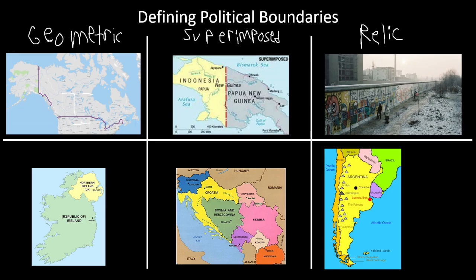Next we have the boundary between Northern Ireland and the Republic of Ireland. Ireland is its own country. Northern Ireland and Ireland used to be one region in the United Kingdom, but the evolution occurred and Ireland is now its own country. This occurred with the evolution of the cultural landscape — people settled, developed culture, and over time the boundary change occurred. This is known as a subsequent boundary. The boundaries are drawn with the evolution of the cultural landscape as time goes on.